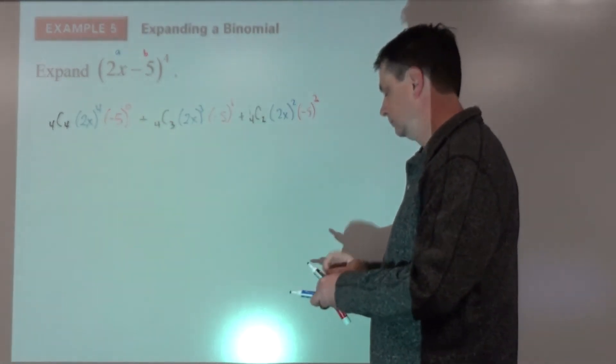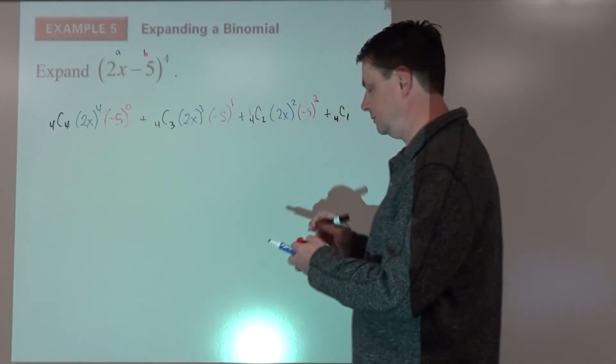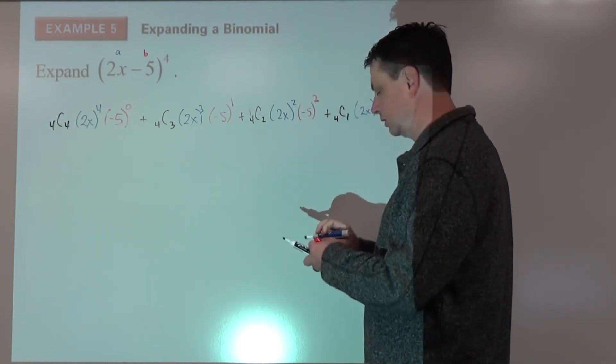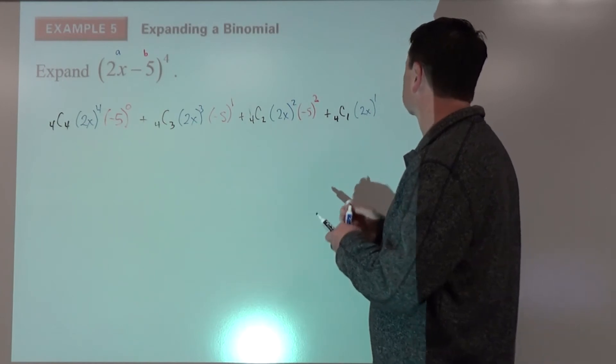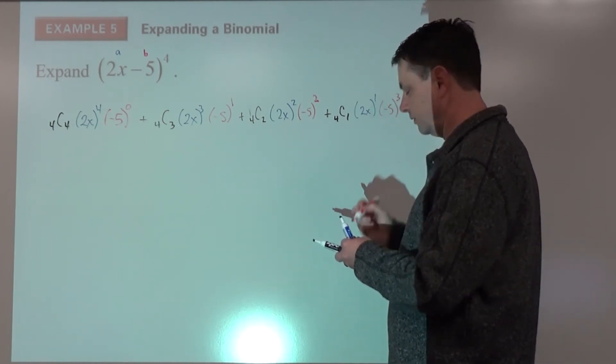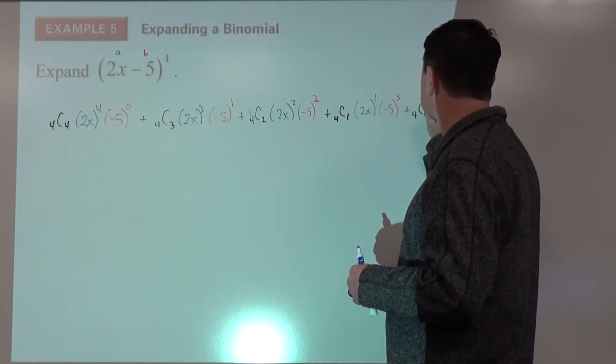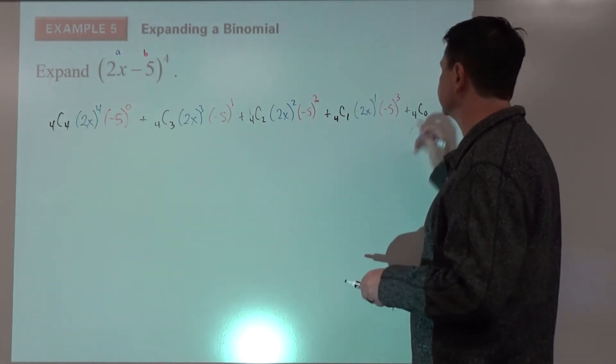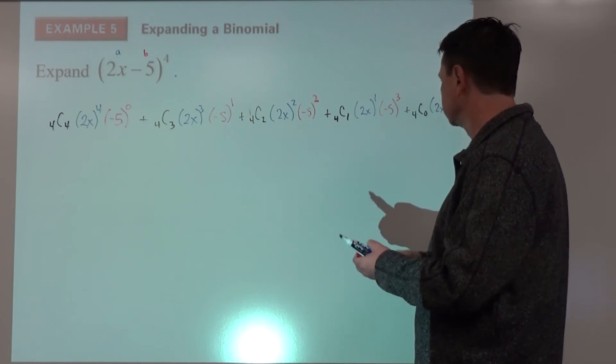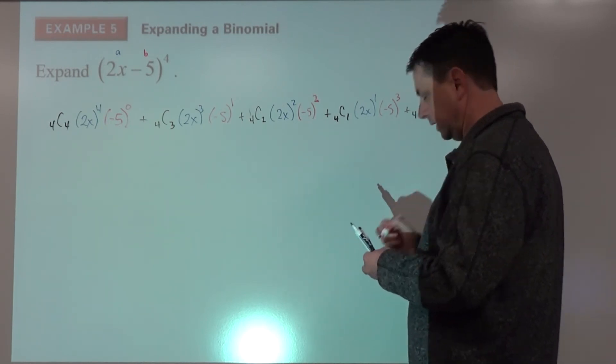Plus 4 choose 1, 2x to the first, negative 5 to the third, plus 4 choose 0, negative 5 to the fourth.